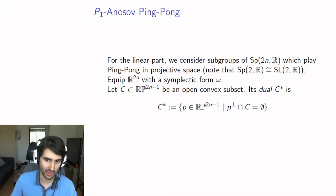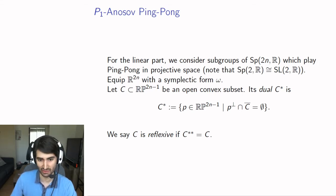Because we have this symplectic form, we can identify the dual projective space of hyperplanes with the projective space itself using the orthogonal complement. In fact, every point is contained in its orthogonal. C star is just the set of points in projective space so that their orthogonal is completely outside of the closure of C. A subset is reflexive if its double-dual is equal to itself.